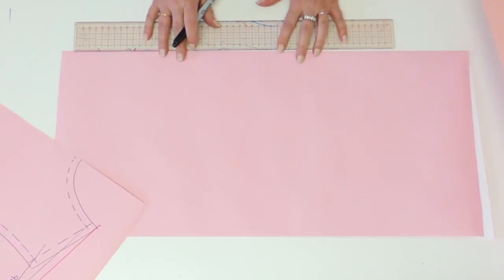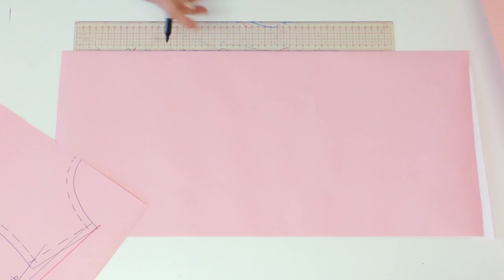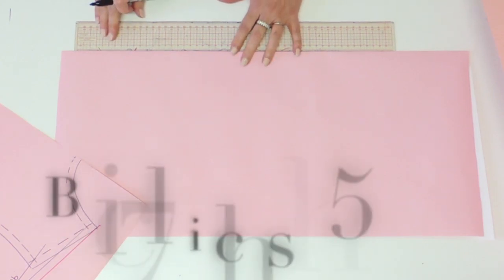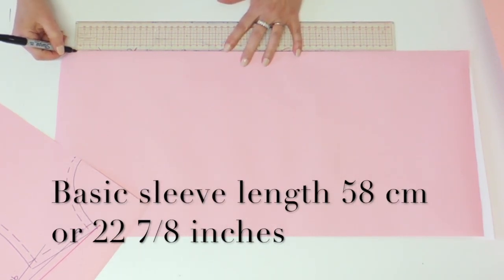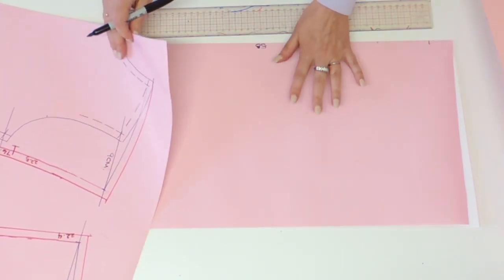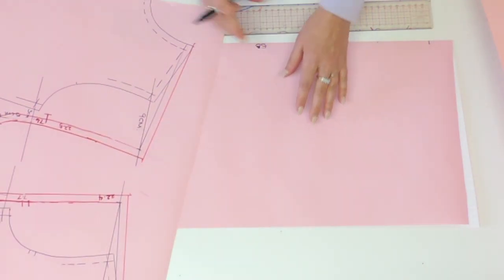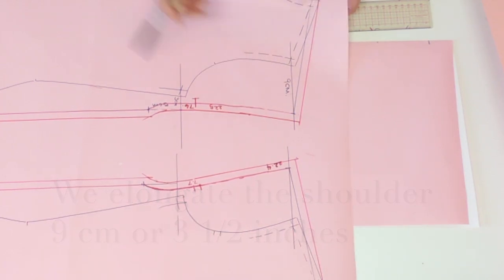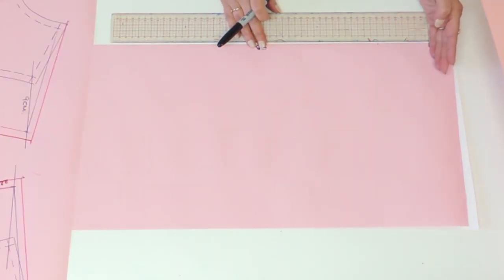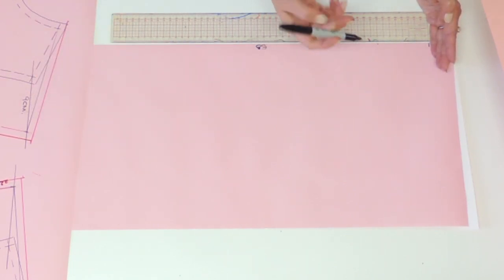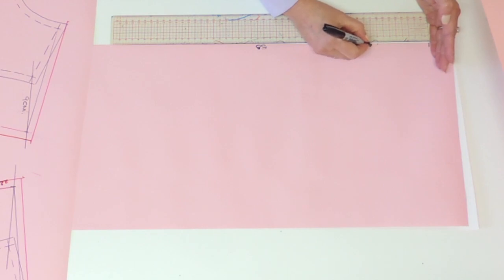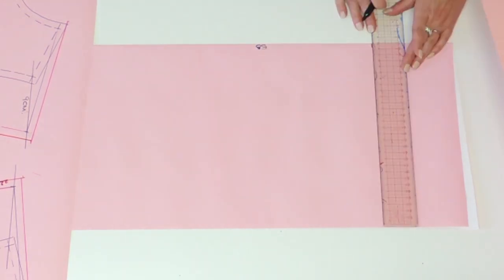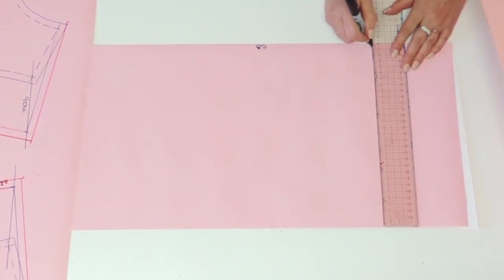Now on the fold line put your basic sleeve length measurement that is usually about 58 centimeters. Now to keep the same length to the sleeve, remembering that we did elongate the shoulder by 9 centimeters. From the top, you're going to remove that measurement. So if I did elongate my shoulder 9, I'm going to remove 9 centimeters and this is going to be my new sleeve head.